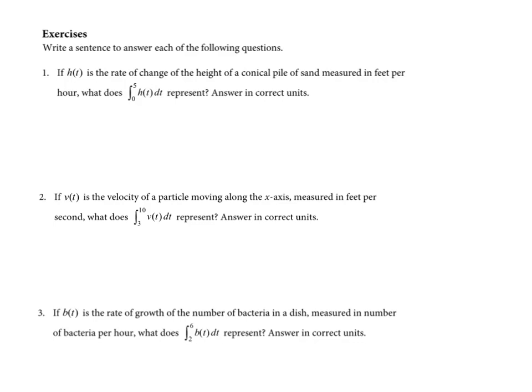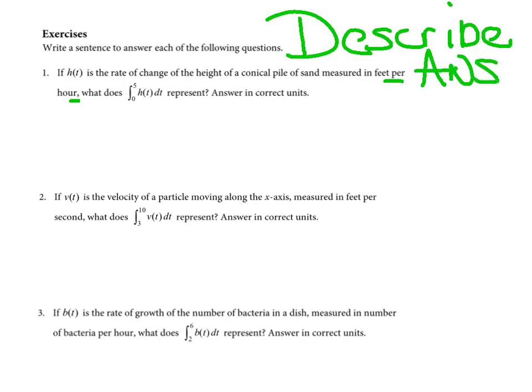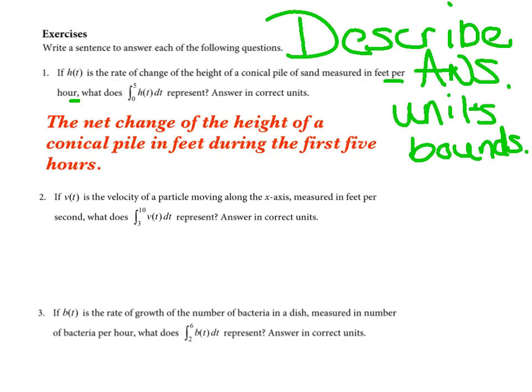All right, while we're at it, we're going to work on some of our sentence structures to make sure we get full credit for this. So basically, I just want you to write a sentence to answer each of the following. H of t is the rate of change of the height of a conical pile of sand measured in feet per hour. What does this integral represent? Okay, so they want you to describe your answer. So let's just make a note. Describe your answer. Okay, and the two things they're going to definitely check are your units and your bounds.